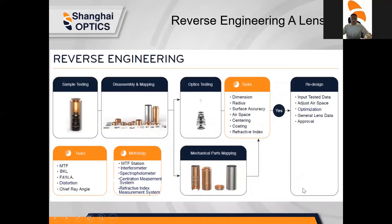This is a chart of the process for reverse engineering. When you send us your sample, we'll disassemble and map the piece using metrology equipment we have in-house. Our optics testing and mechanical parts mapping is the next phase, which includes dimensioning, radius, surface accuracy, airspace, centering, coating, and refractive index. From that point, we move into the redesign phase — inputting test data, adjusting airspace, optimizing performance, compiling general lens data, and obtaining customer approval.